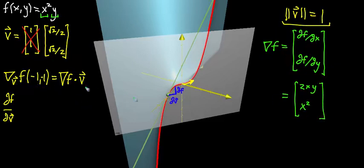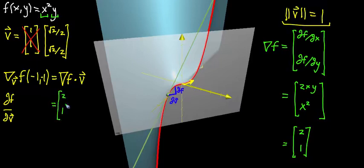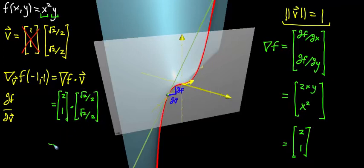Evaluating at the point (-1, -1): two times negative one times negative one is two, and negative one squared is one. So the gradient at that point is (2, 1). Now we take the dot product with v = (√2/2, √2/2). Multiplying the first components: 2 × √2/2 = √2. Multiplying the second components: 1 × √2/2 = √2/2. That sum is our answer — that is our slope.